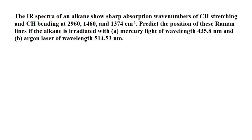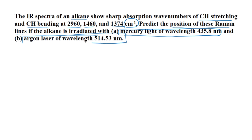We will end this lecture by solving a problem related to Raman spectroscopy. The IR spectrum of an alkane shows sharp absorption at wave numbers 2960, 1460, and 1374 cm⁻¹ corresponding to C–H stretching and C–H bending. We have to predict the position of the Raman lines when the alkane is irradiated first with mercury light of wavelength 435.8 nm, and second with an argon laser of wavelength 514.53 nm.